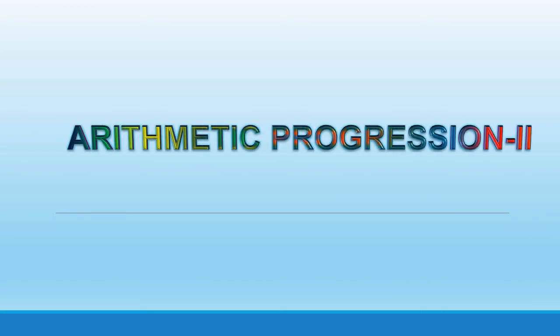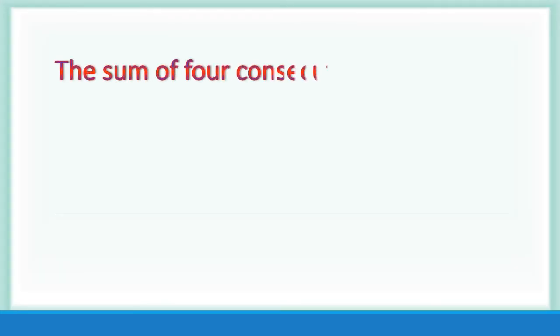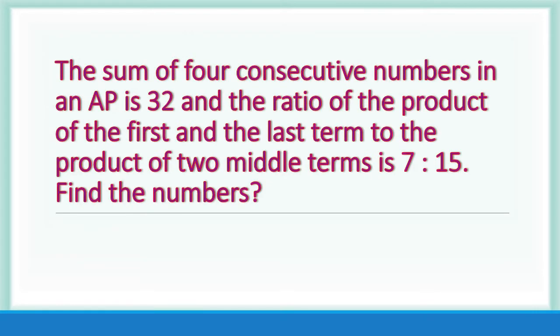Arithmetic progression. The sum of four consecutive numbers in an AP is 32, and the ratio of the product of the first and last term to the product of the two middle terms is 7 is to 15. Find the numbers.